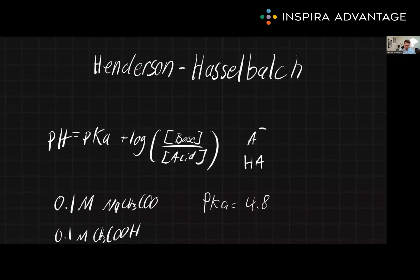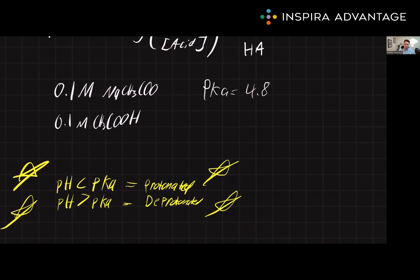Let's practice this a little bit. Let's say you have a buffer solution containing 0.1 molar acetic acid and 0.1 molar sodium acetate, and you want to know the percent deprotonation of acetic acid at a pH of 4.8. The pKa of the acetic acid is also 4.8. Using the Henderson-Hasselbalch equation, try and calculate this on your own first.